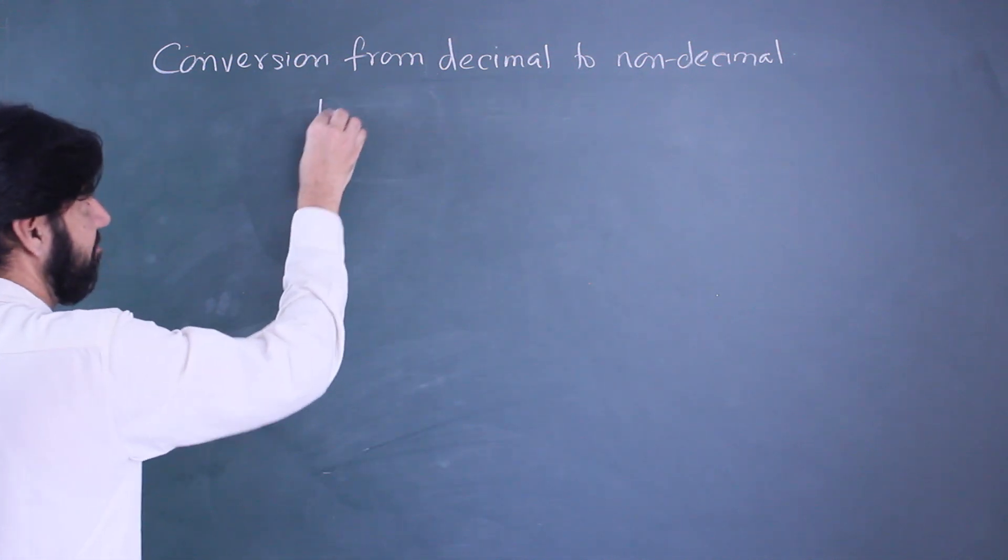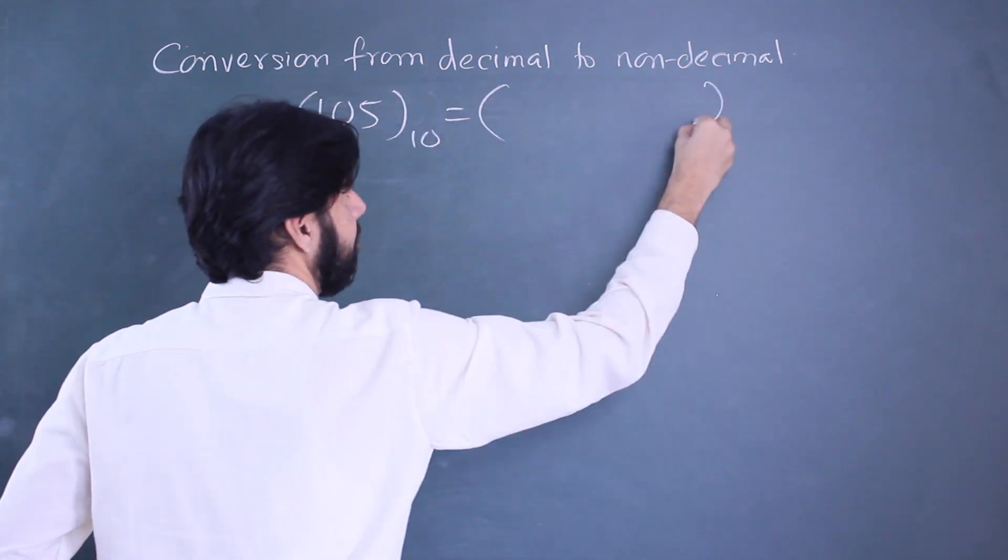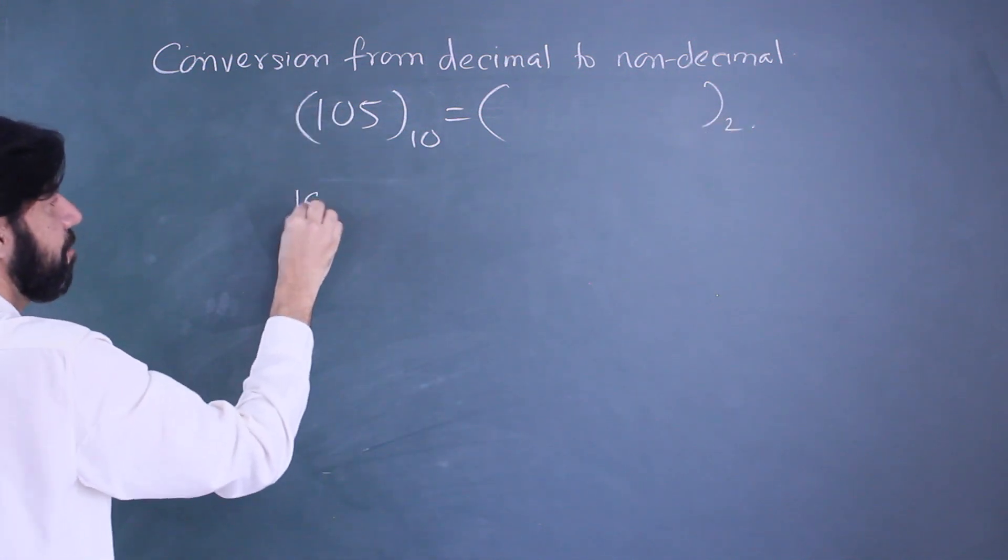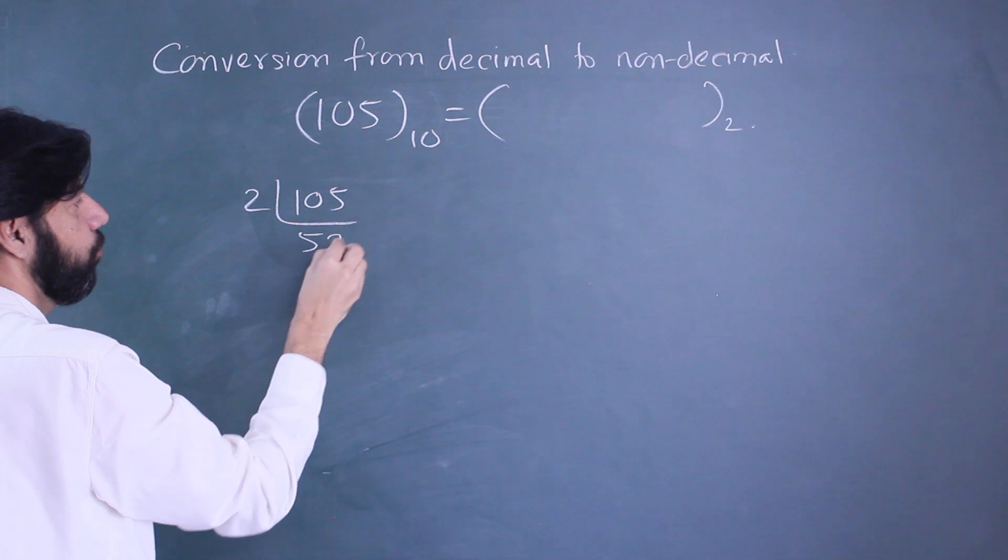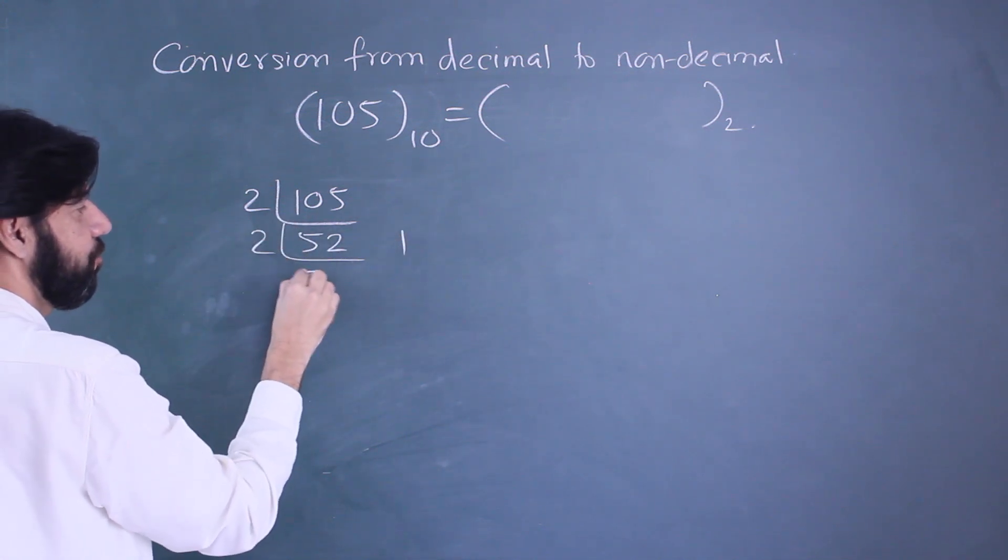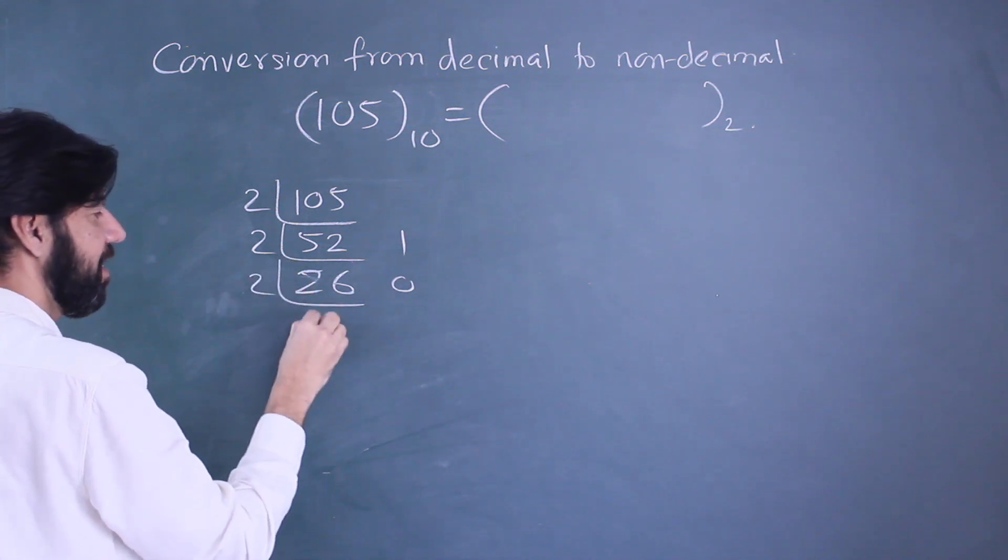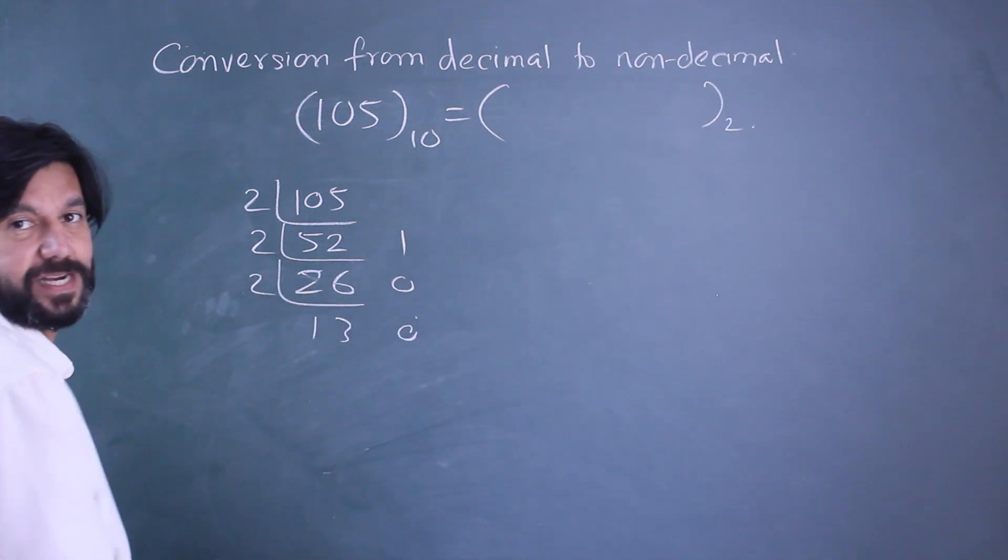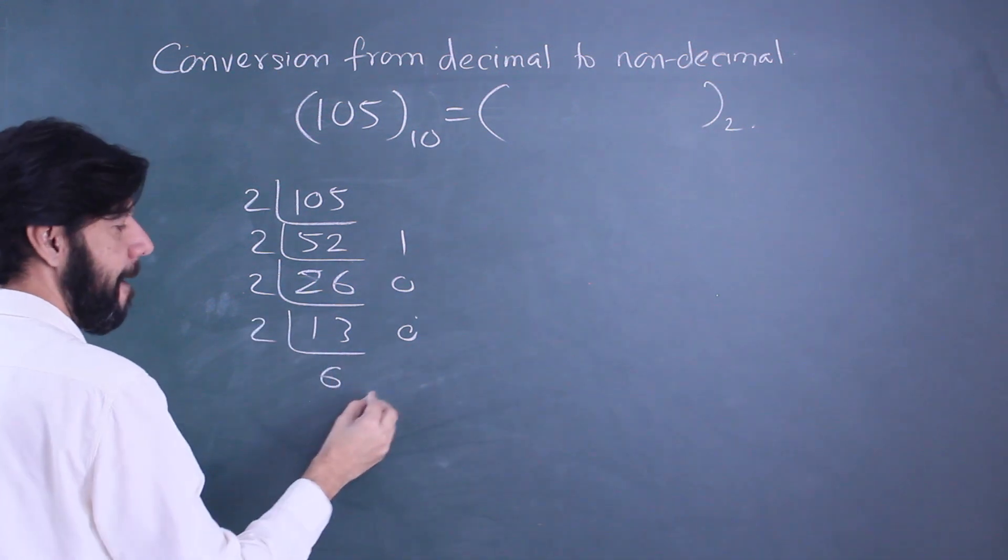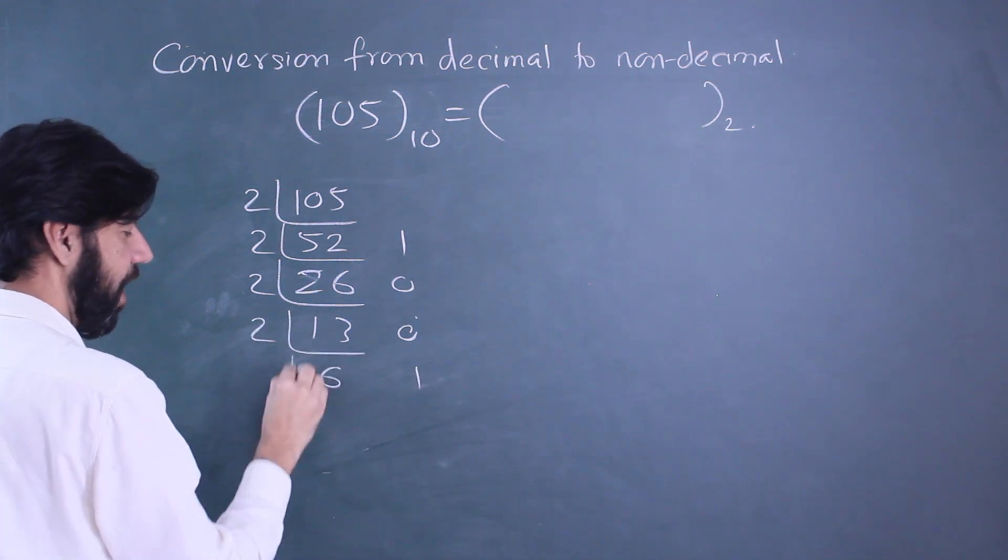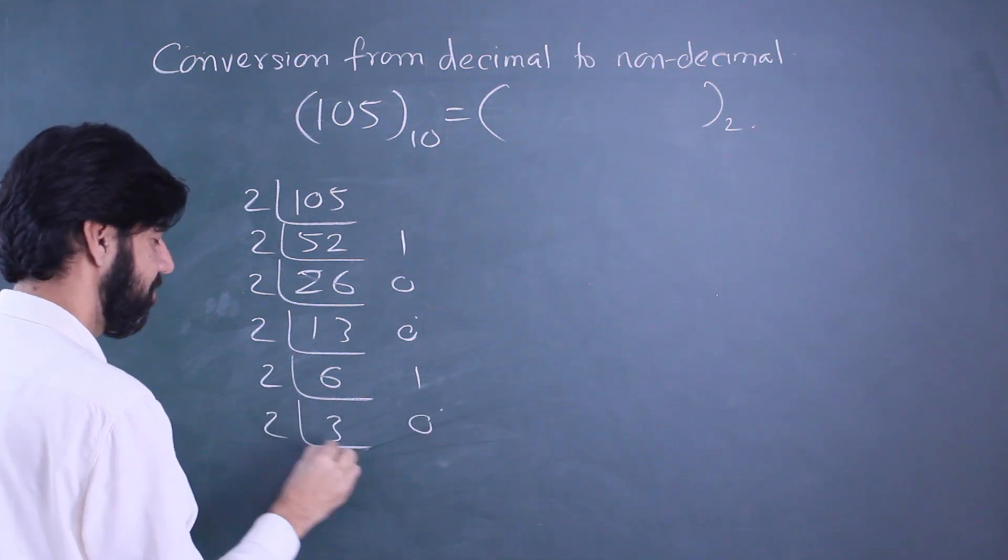We'll convert 105 of decimal to a binary number. The process: start dividing by 2. 52, remainder 1. Divide by 2: 26, remainder 0. Divide by 2: 13, remainder 0. Divide by 2: 6, remainder 1.